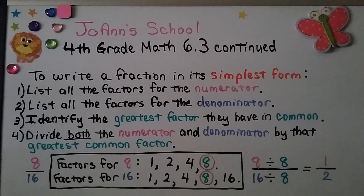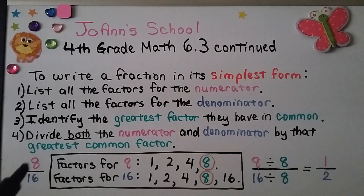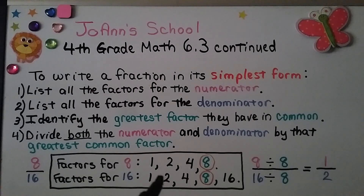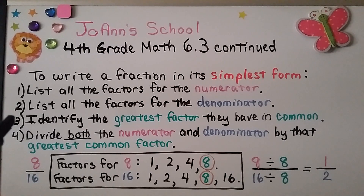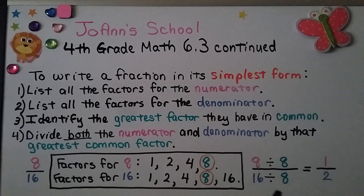To review: to write a fraction in its simplest form, first list all the factors for the numerator. For eight-sixteenths, the factors for eight are one times eight and two times four. Then list all the factors for the denominator: the factors for sixteen are one times sixteen, two times eight, and four times four. Identify the greatest factor they have in common — that's eight. Divide both numerator and denominator by eight: eight divided by eight is one, sixteen divided by eight is two. Eight-sixteenths equals one-half.